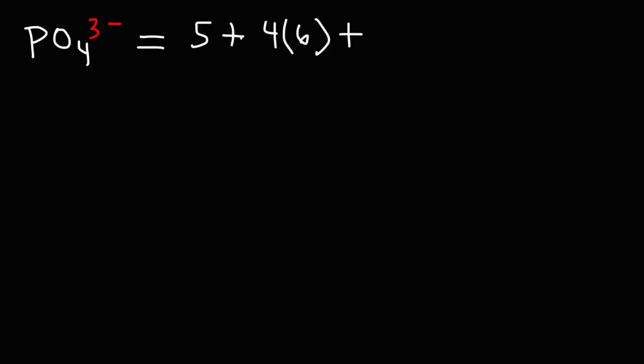Since the net charge is negative 3, we need to add 3 electrons because of that. So we have 5 plus 4 times 6 is 24, and then plus 3. 5 plus 24 is 29. 29 plus 3 is 32. So this particular polyatomic ion has 32 valence electrons.